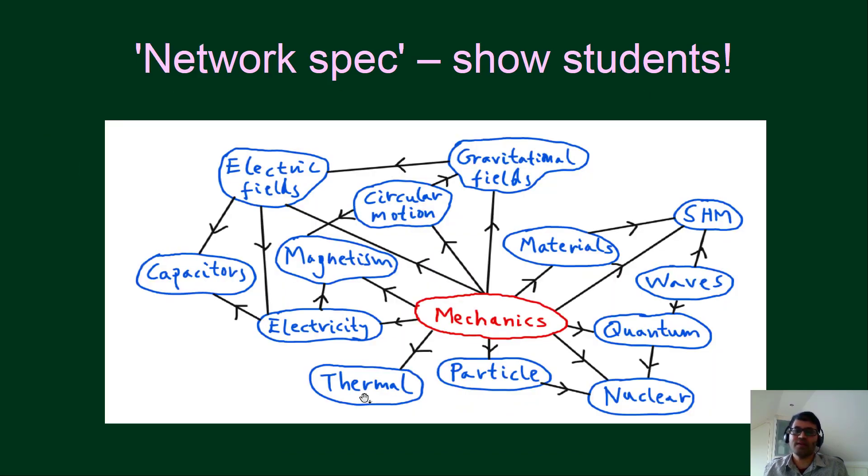So one thing that I think that can help students grasp the importance of mechanics and also perhaps even better organize their information and knowledge inside their heads, is instead of showing or presenting the spec, the specification as some sort of linear list, perhaps a sort of network specification would be better. So this clearly shows the central starring role of mechanics. It's like the central node which connects to virtually everything else in all other topics in the course. By the way, these links aren't supposed to be exhaustive because they would get far too messy.